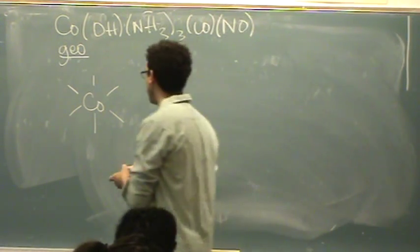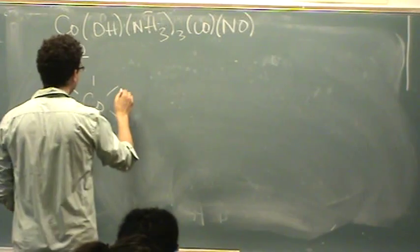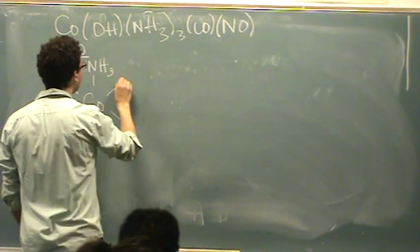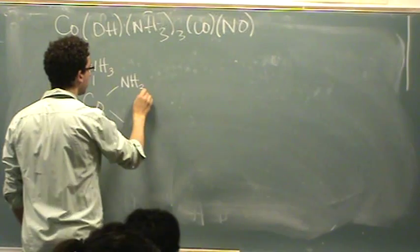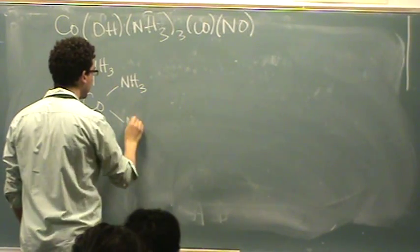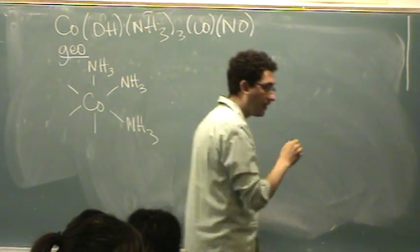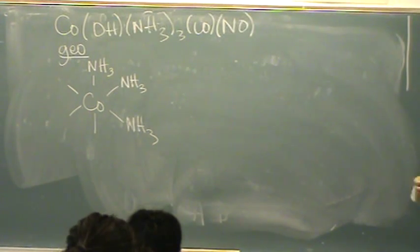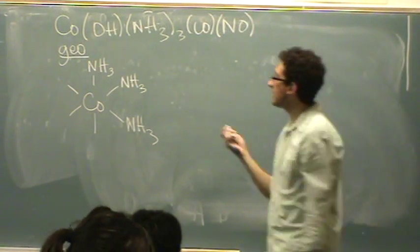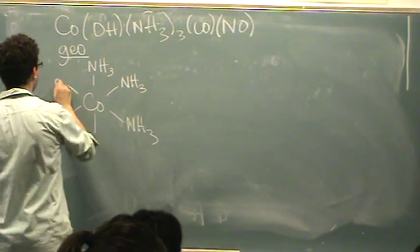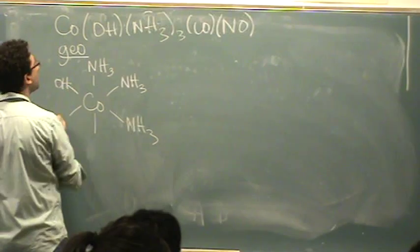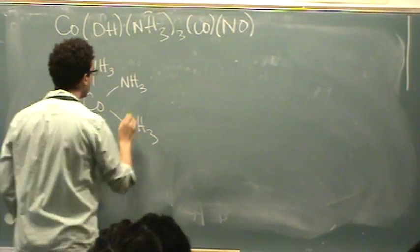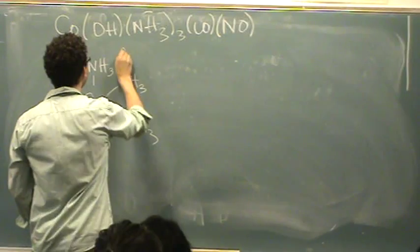So let me draw the fac and the mer. I'll draw the fac up here. Fac is where you put the NH3s — which are the three identical ligands — all on different axes. Think of the X, Y, Z axes. And then fill in the rest with the other three: OH, CO, and NO. This is the fac.